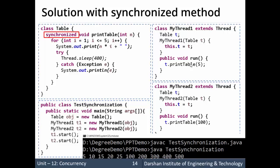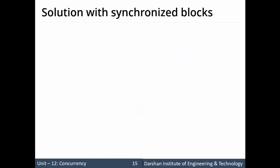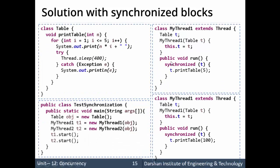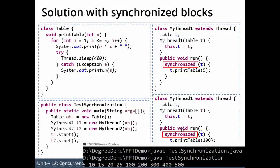There is also another way to achieve the same thing using a synchronized block. In the run method, instead of a synchronized method, we add a synchronized block with the reference of the object to be synchronized — synchronized(t) — and inside it we call t.printTable. Both ways produce the same output. This is what synchronization in Java for multi-threading is all about.